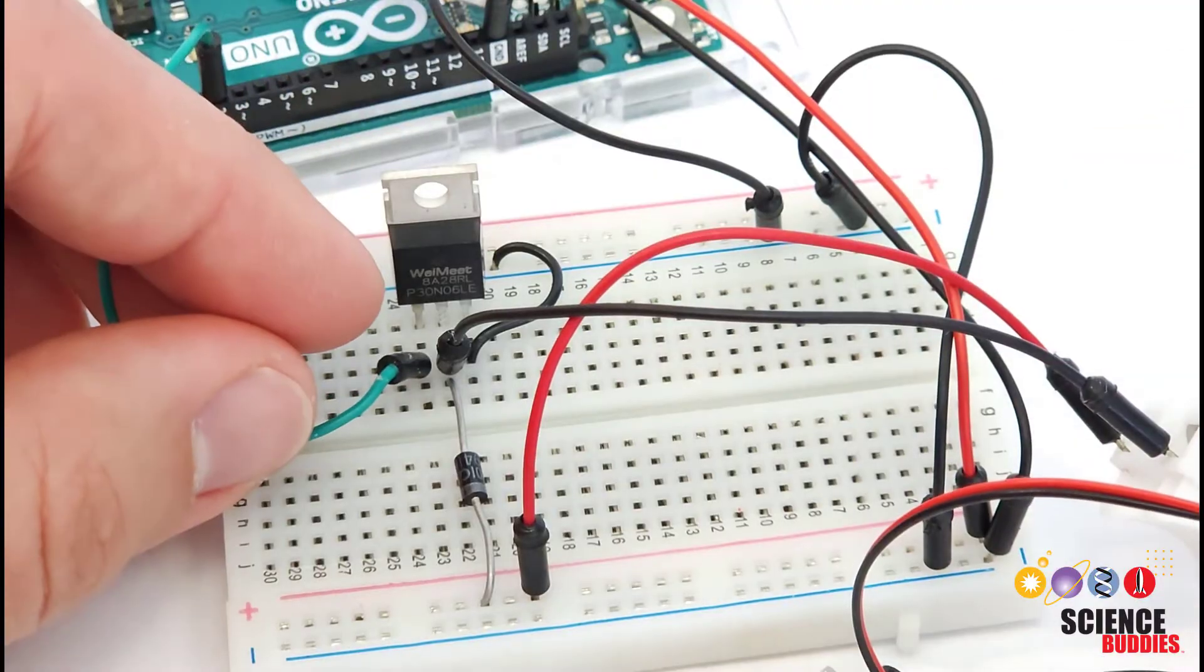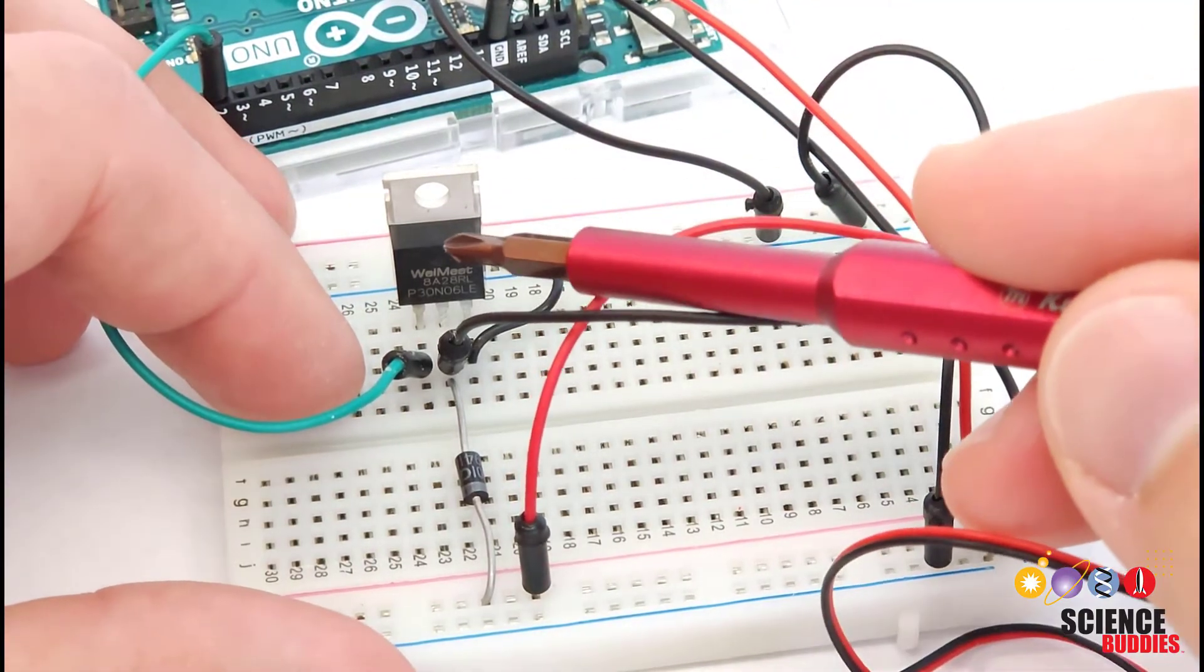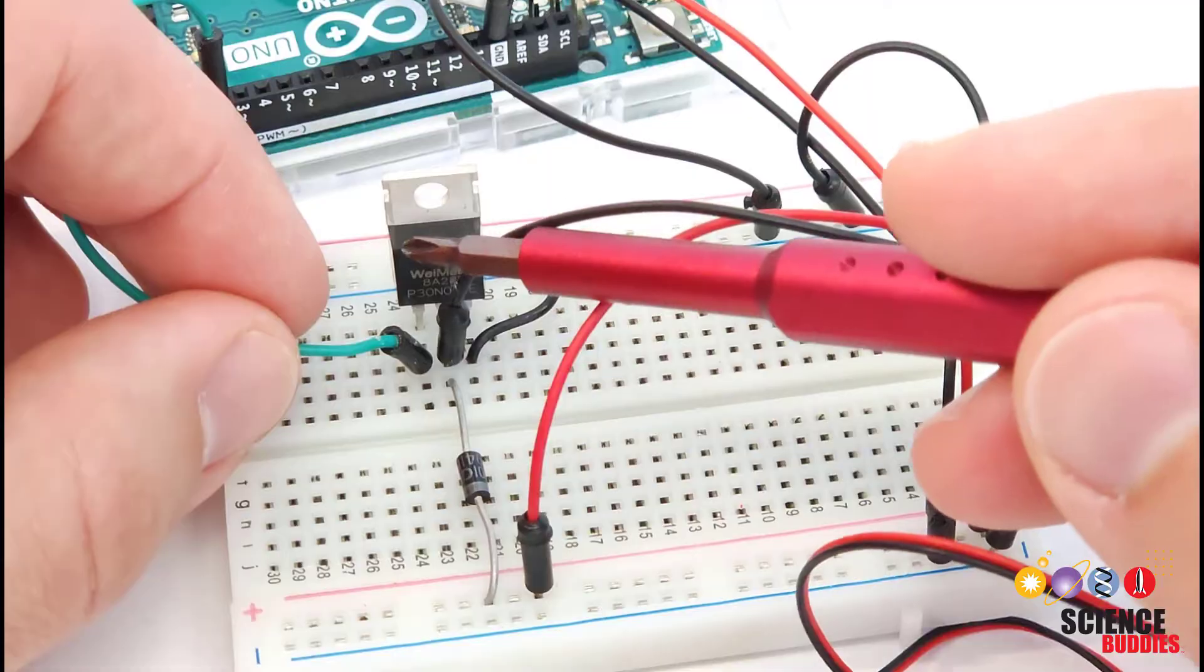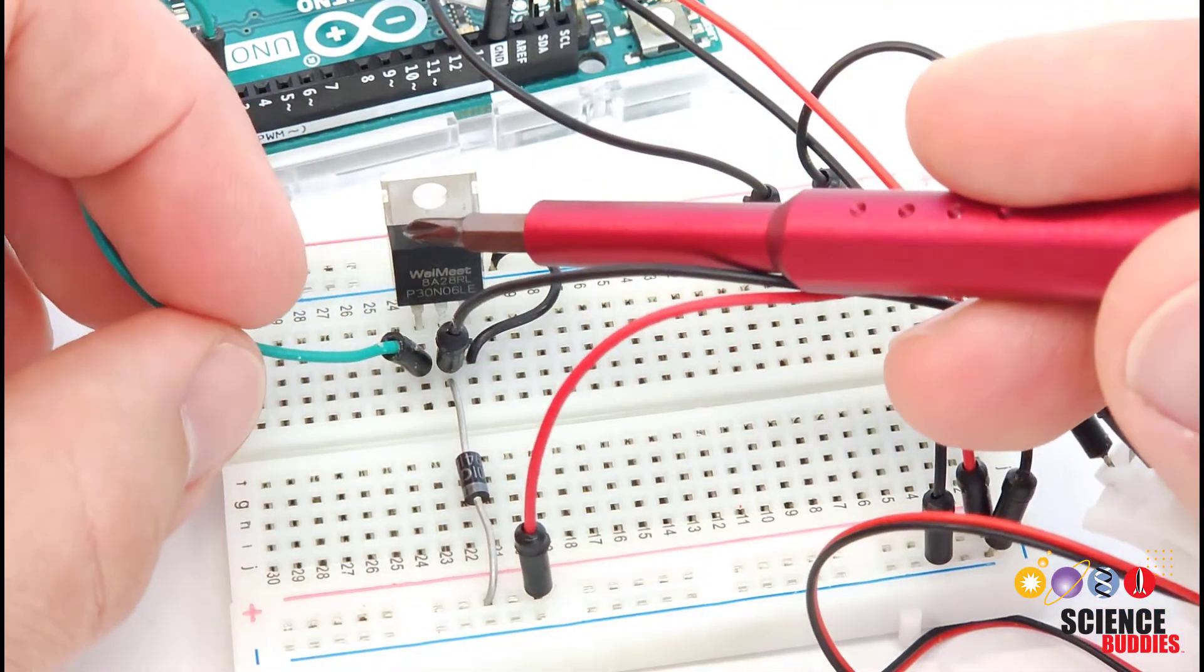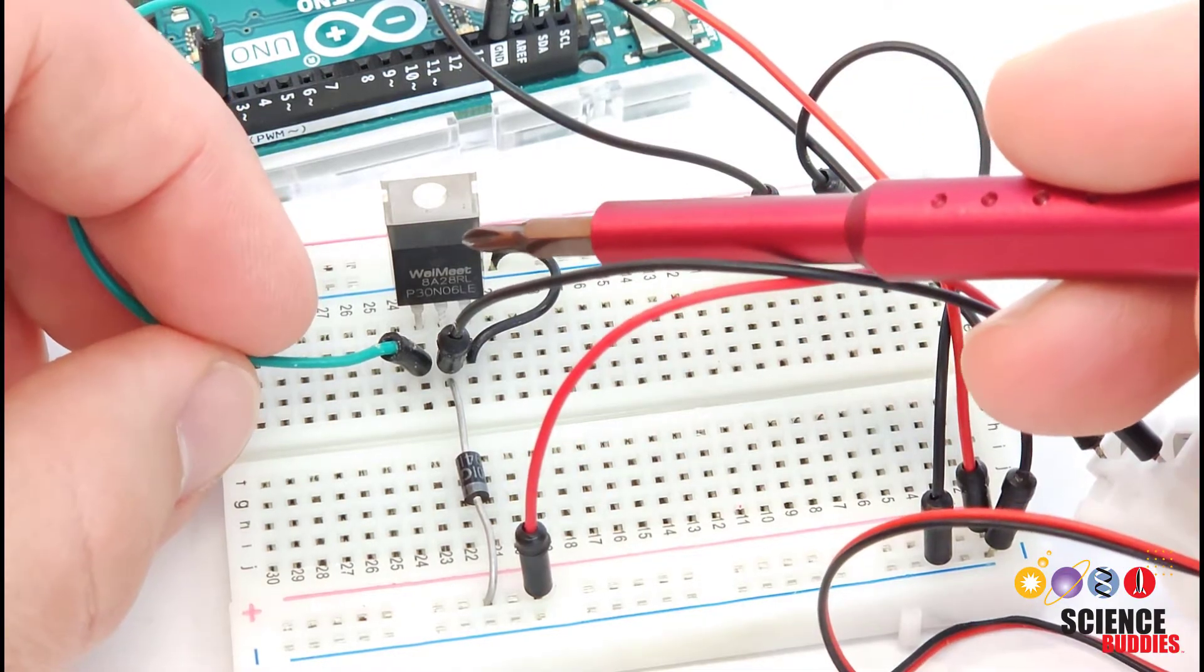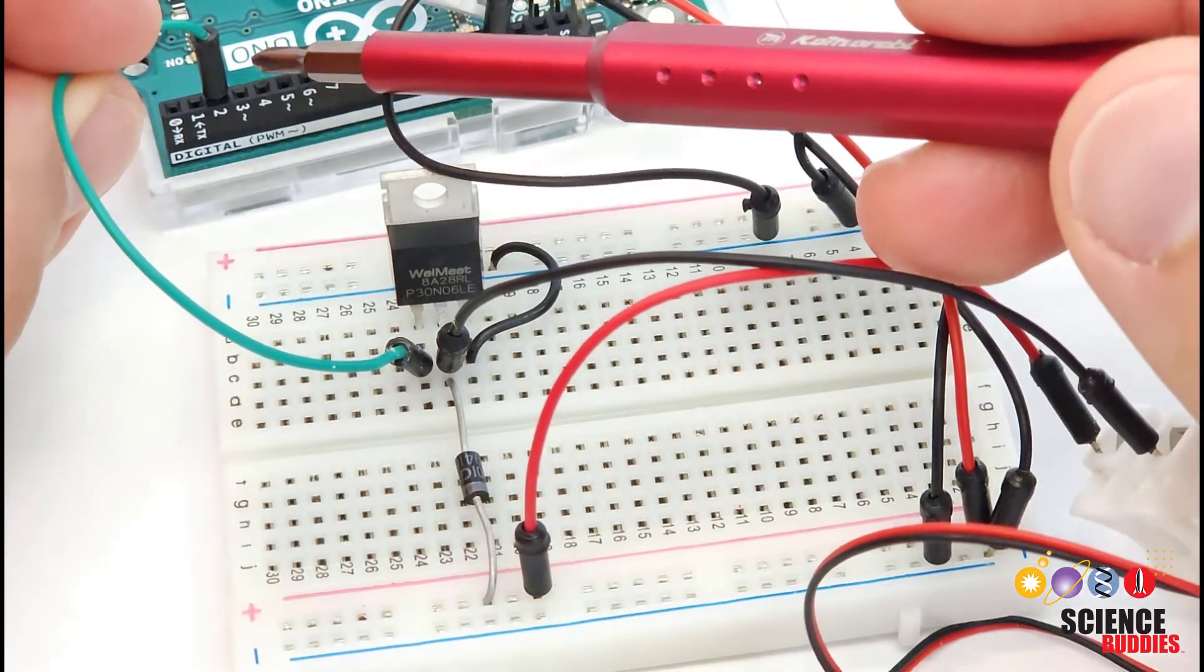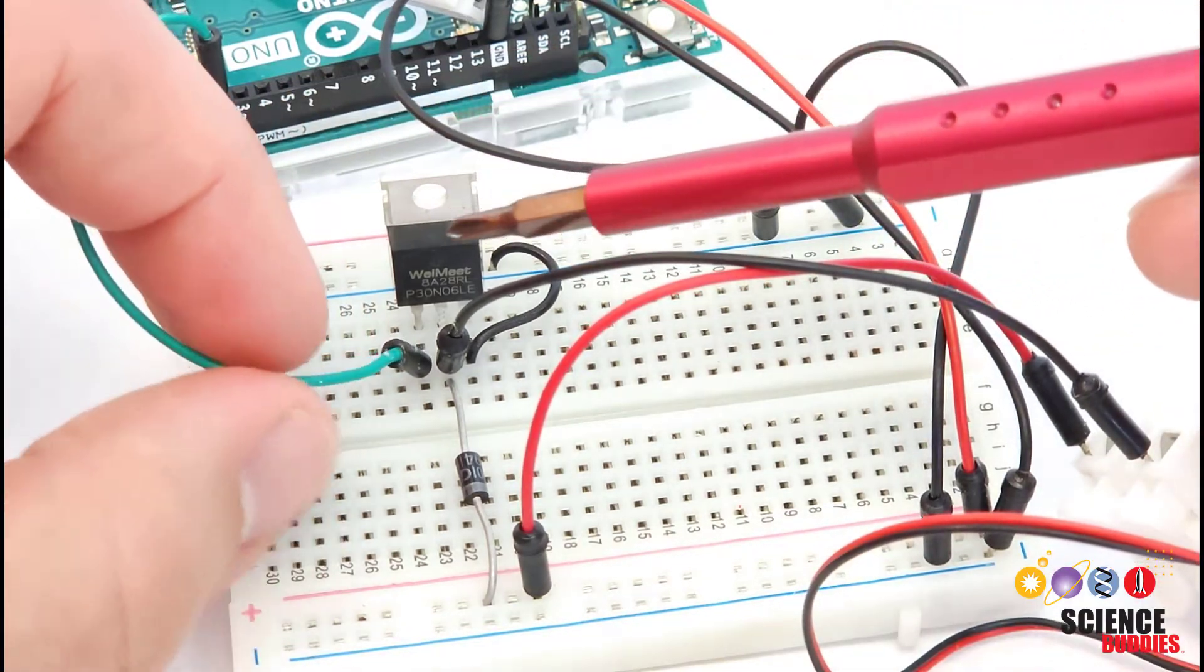So this particular type of transistor is called an N-channel MOSFET. We are not really going to get into the details of different types of transistors and what that means in this video. I'm just going to show you how to use it. This type of transistor has three pins going from left to right. We have the gate, the drain, and the source. So pins 1, 2, and 3 from left to right. The gate is the control pin. That is the one that you're going to connect to an I.O. pin on your Arduino. So I have that connected to Arduino pin 2 here.